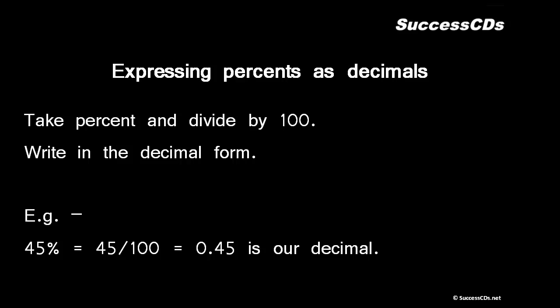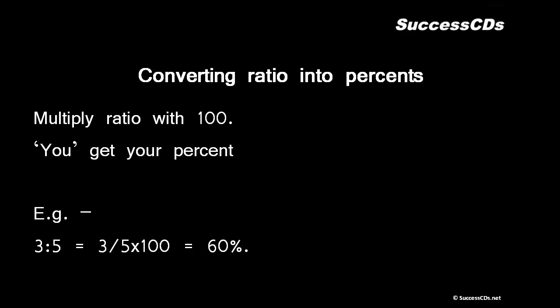Converting ratios into percent: whatever ratio is given to you, multiply that ratio with 100. After dividing in the lowest possible form we get a percent.